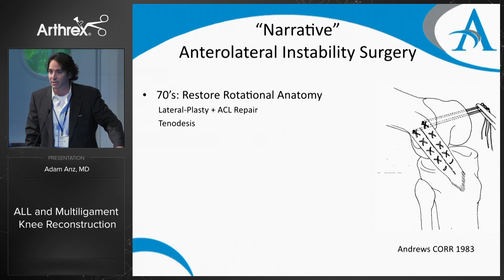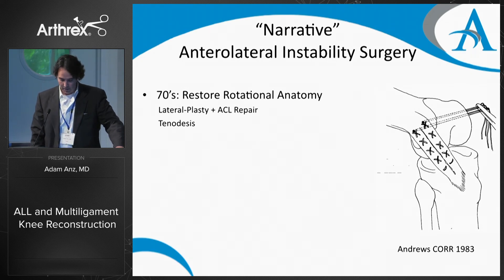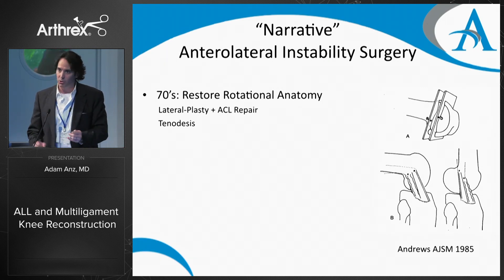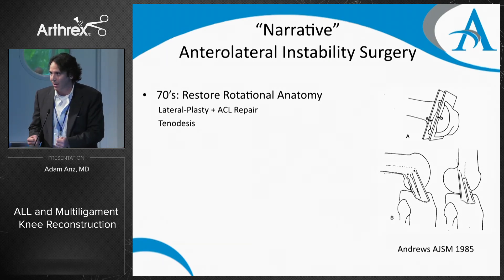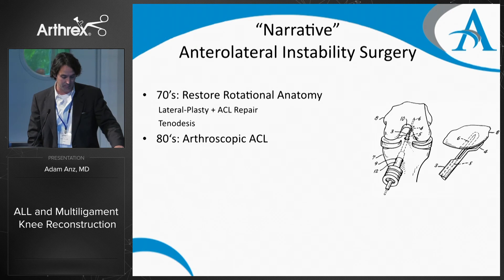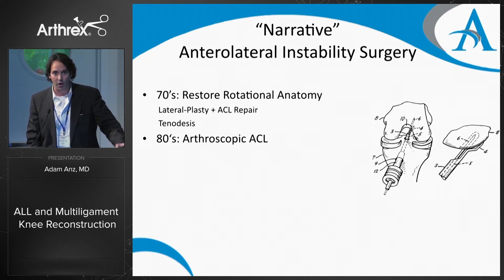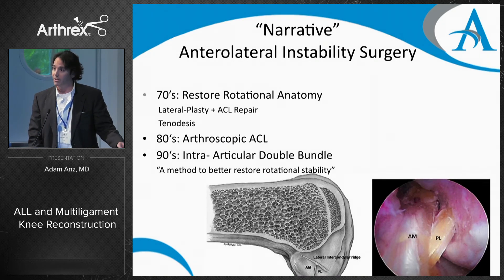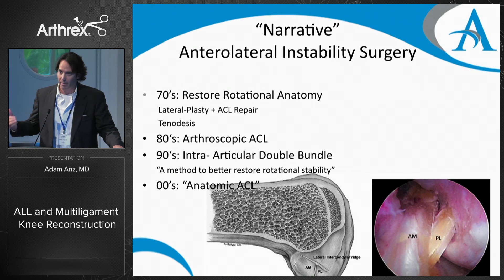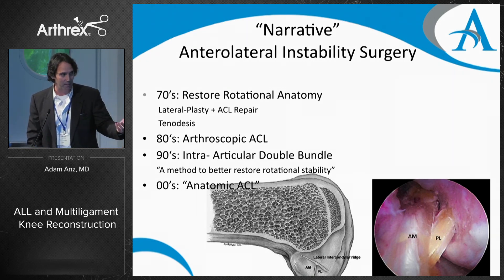In the 70s it was lateroplasty plus an ACL repair. Andrews published about it in 1983, and in 1985 he started thinking about getting two bundles with a lateral tenodesis — trying to construct a double bundle style laterally. Then in the 80s we started thinking about arthroscopic ACL reconstruction, and in the 90s Freddy Fu's thoughts about double bundle pushed us toward anatomic ACL reconstruction.